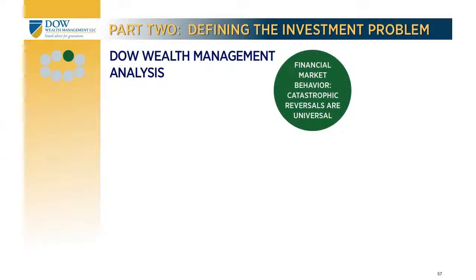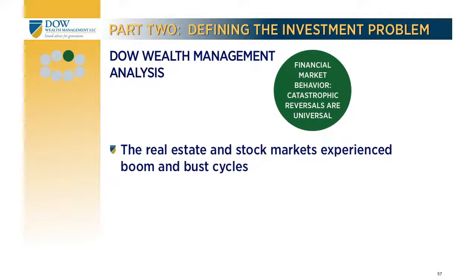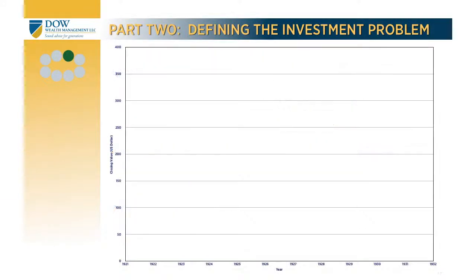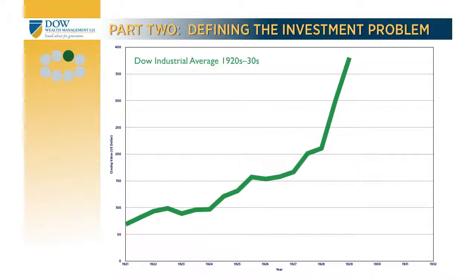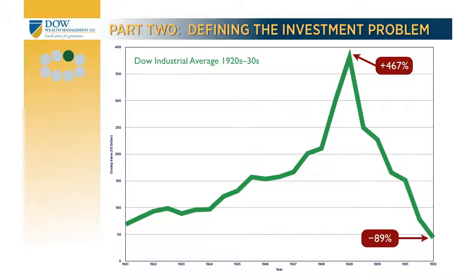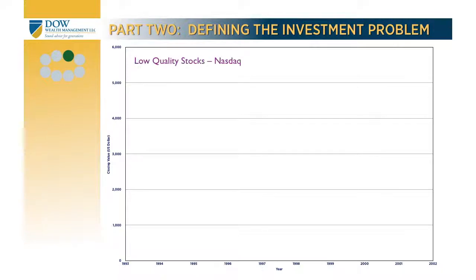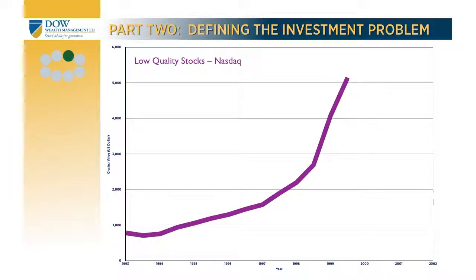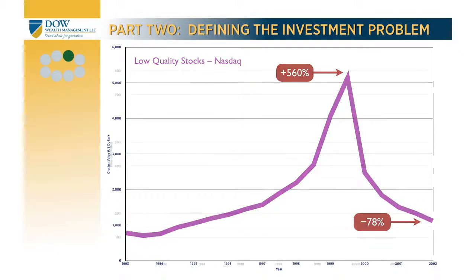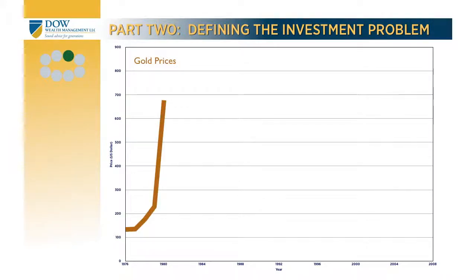Let's start by understanding how financial markets behave. The real estate and stock markets have of course been through a recent boom and bust cycle. Here is the behavior of the US stock market in the 1920s and 1930s — there was an enormous rise in valuations of up 467%, followed by a precipitous decline. Here's how low-quality stocks performed in the 1990s and early 2000s — the low-quality index of the Nasdaq showed an enormous rise followed by a precipitous decline.